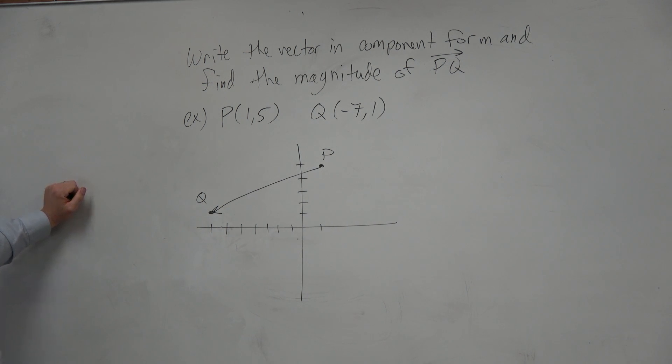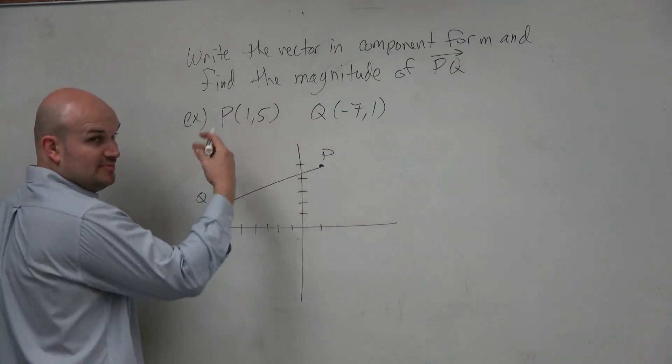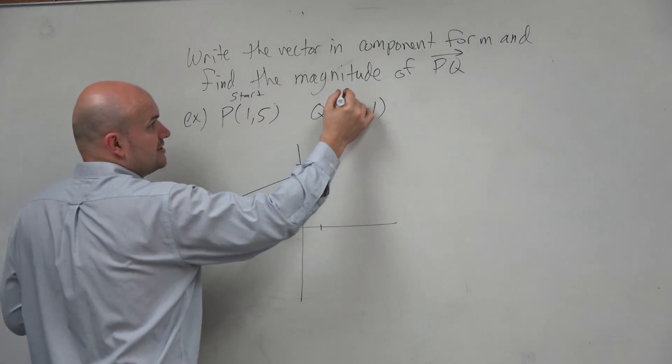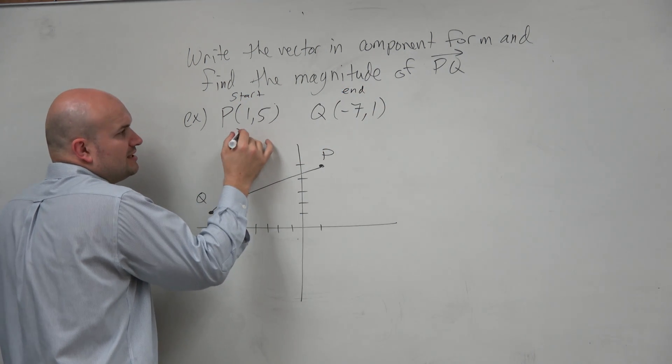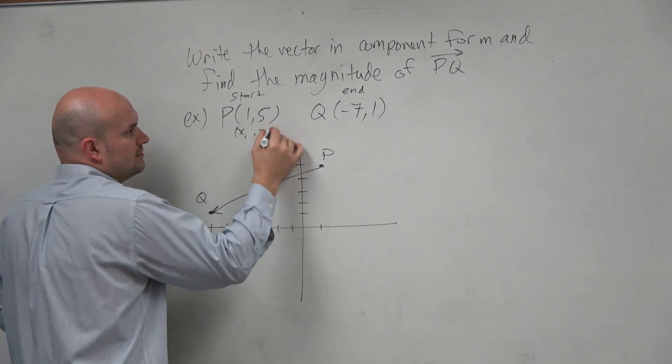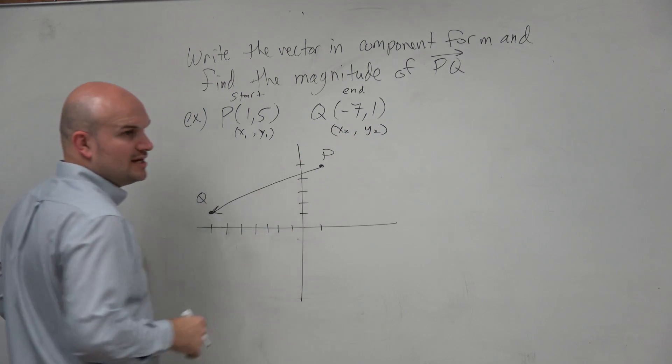Now, if we label here's our initial point, since we're doing P to Q, that means here is our start and here's our end. So in doing that, I'm going to label this as my x1 and here's my y1, and this will be my x2 and my y2, because those are like the second points.